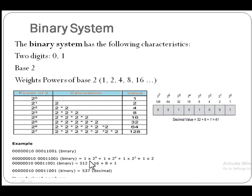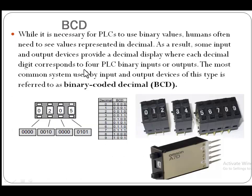We can convert a binary number into a decimal number. For example, given a binary number, we can convert it by multiplying each digit with 2 raised to its positional power. The digits with power 0 through 9 are each multiplied accordingly — for example, 1 into 2 raised to power 9, 1 into 2 raised to power 4, 1 into 2 raised to power 3, plus 1 into 2 raised to power 0. Adding all these numbers gives the result as a decimal number.